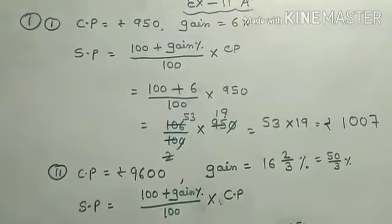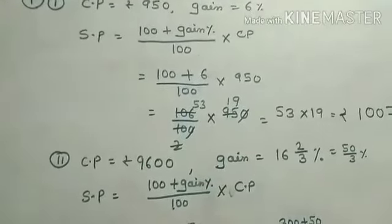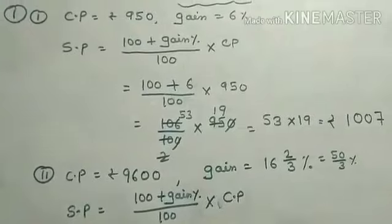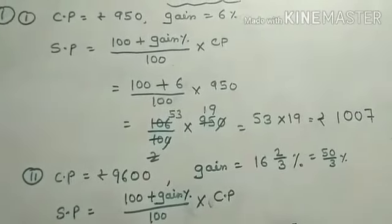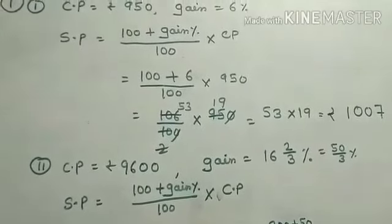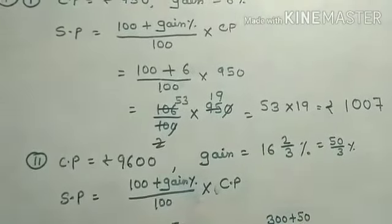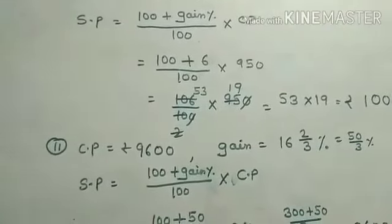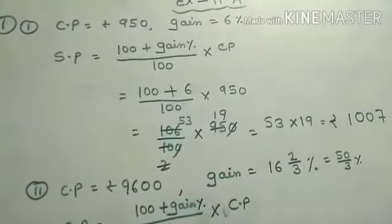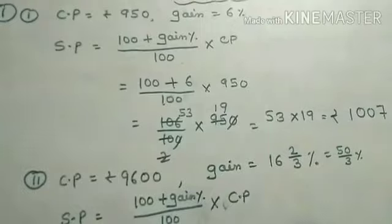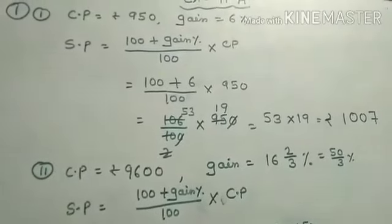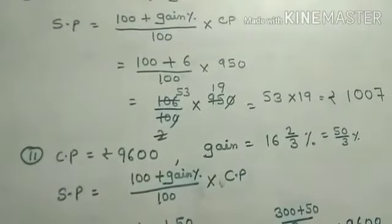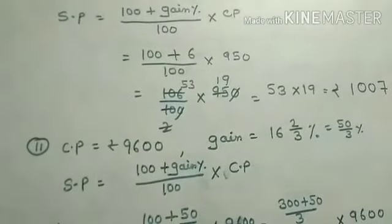Now Exercise 11A starts. Question number 1: Find the SP. CP = ₹950, Gain = 6%. Formula: SP = [(100 + Gain%) ÷ 100] × CP. All students write the formula — you must write it in your copy, otherwise marks will be deducted in the exam. SP = [(100 + 6) ÷ 100] × 950 = ₹1007.